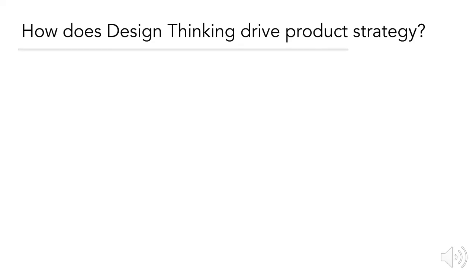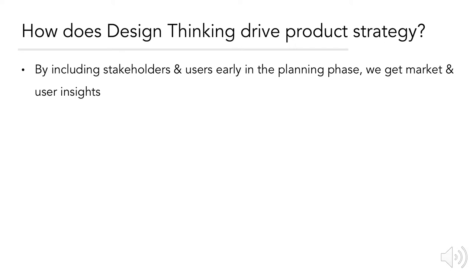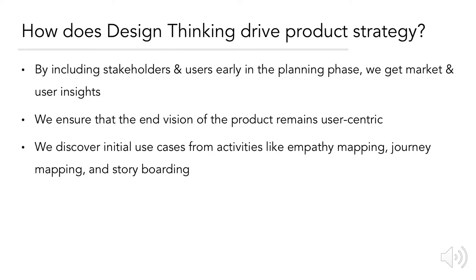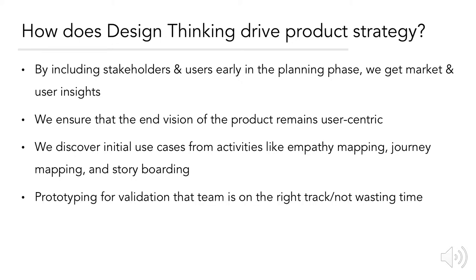How does design thinking drive product strategy? By including stakeholders and users early in the planning phase, we get market and user insights. We ensure that the end vision of the product remains user-centric, discovering initial use cases from activities such as empathy mapping, journey mapping, and storyboarding. Additionally, we prototype — and this early, inexpensive prototyping allows us to validate that the team is on the right track and not wasting time. A lot of a company's budget each year goes to paying employees, and when that time is spent on something that won't generate enough return, someone has to be held responsible — often the product owner.